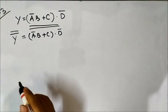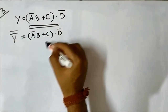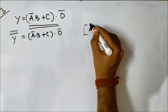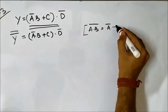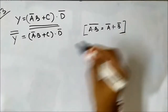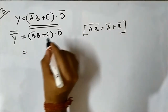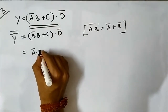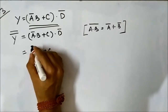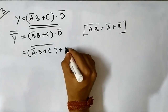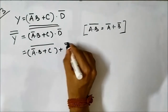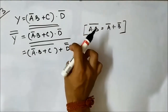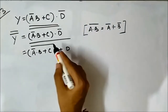Now if we apply De Morgan's theorem — where (a AND b) complement equals a complement OR b complement — this portion becomes: (a complement AND b AND c) whole complement OR (d complement) complement, all under complement. We know the double complement of any variable neutralizes, so we simplify accordingly.